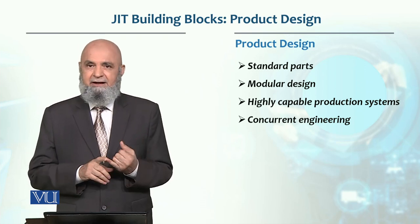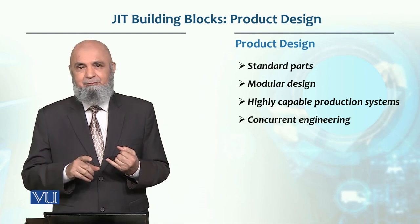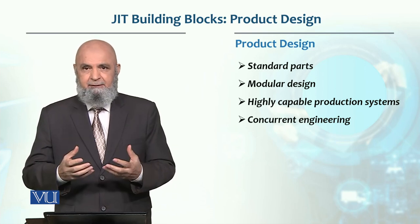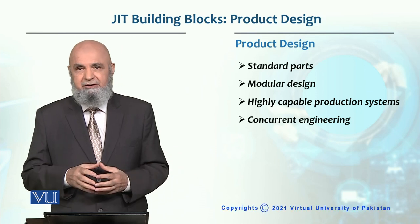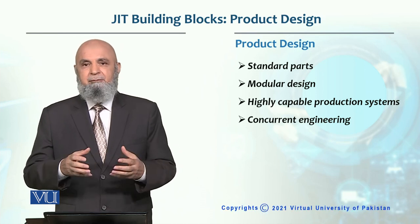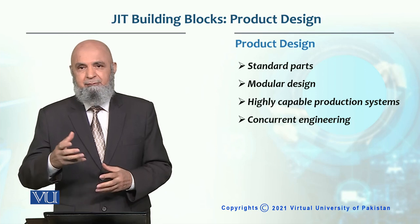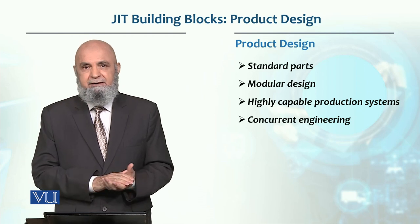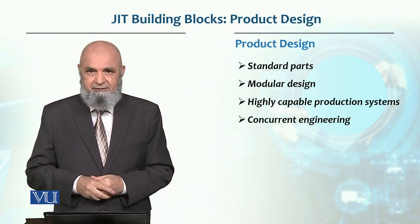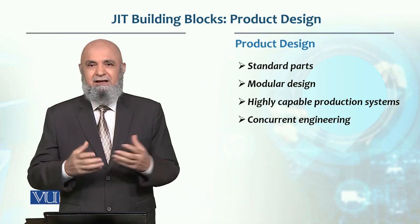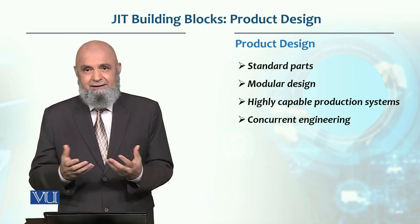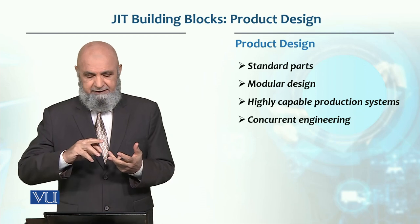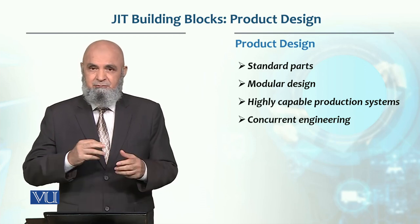For example, in traditional product design, the design department would design a product and then send it to the production department. The production department would try to produce it and find problems, then send it back to the design department, creating delays. In concurrent engineering, the design department, production department, purchase department, finance, and marketing are all called in together.